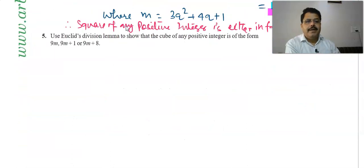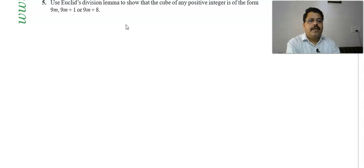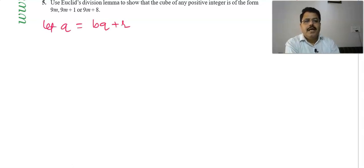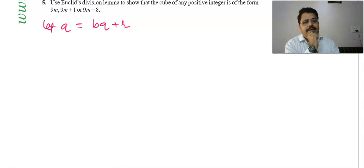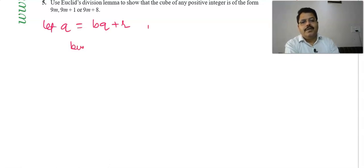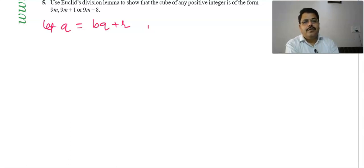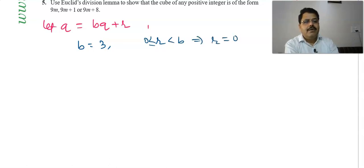Next question: Use Euclid's Division Lemma to show that the cube of any positive integer is of the form 9m, 9m + 1, or 9m + 8. Let a = 3q + r. If b = 3, then r must be less than 3 and greater than or equal to 0. So r can be 0, 1, or 2.